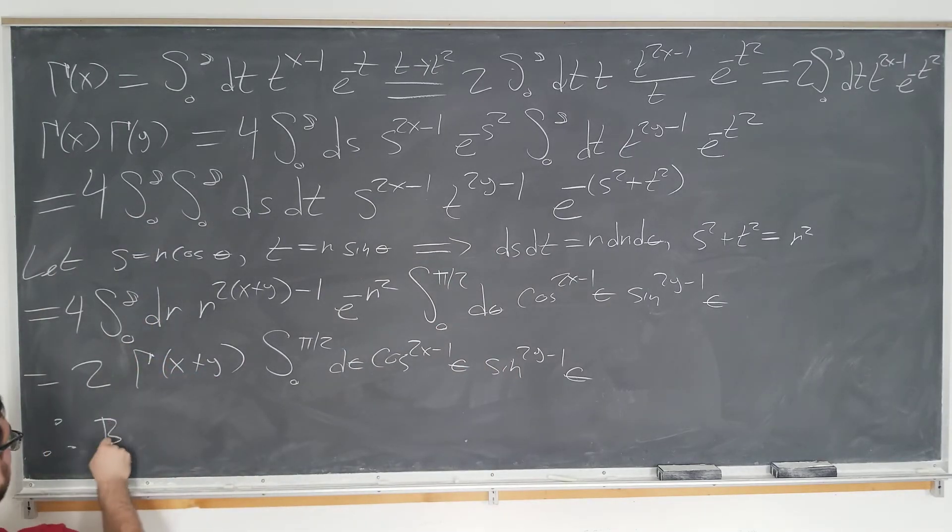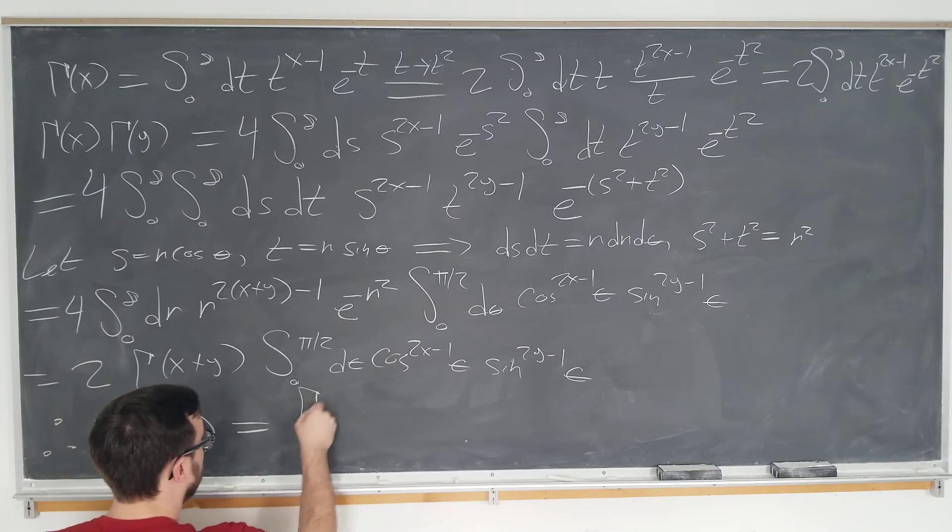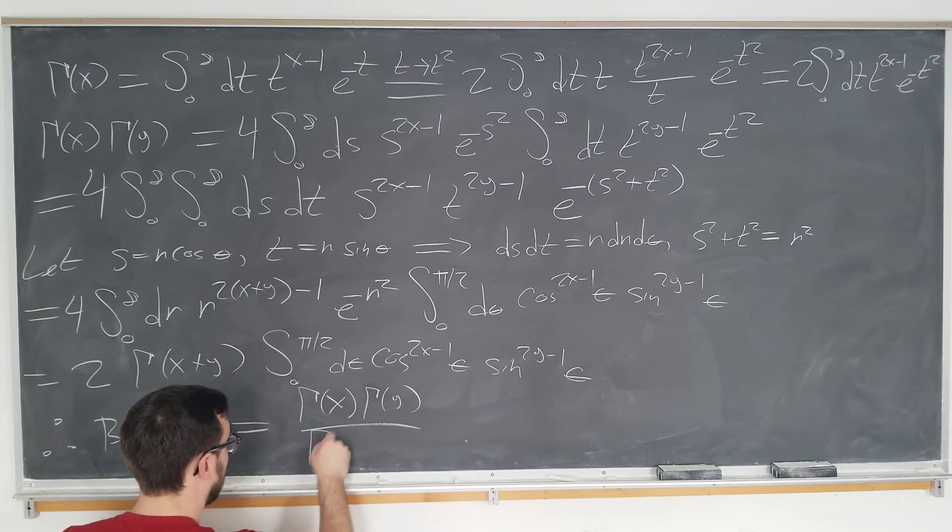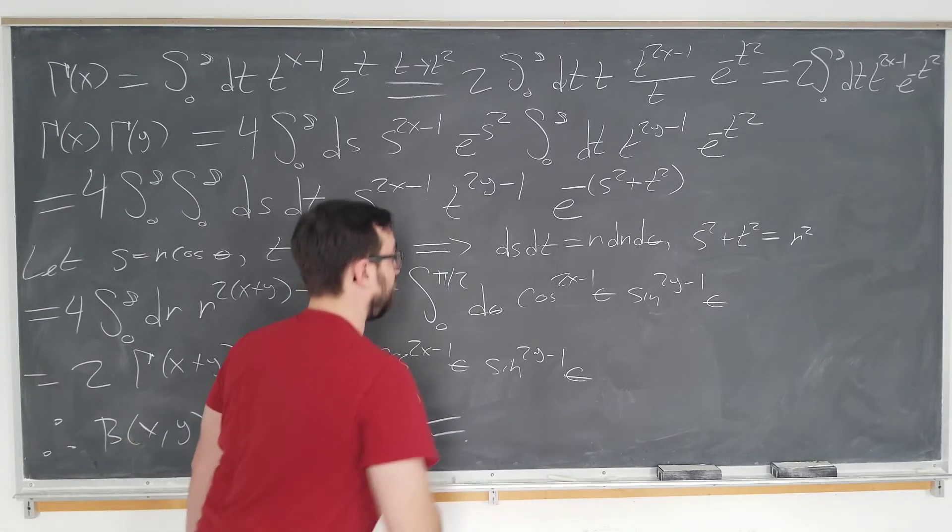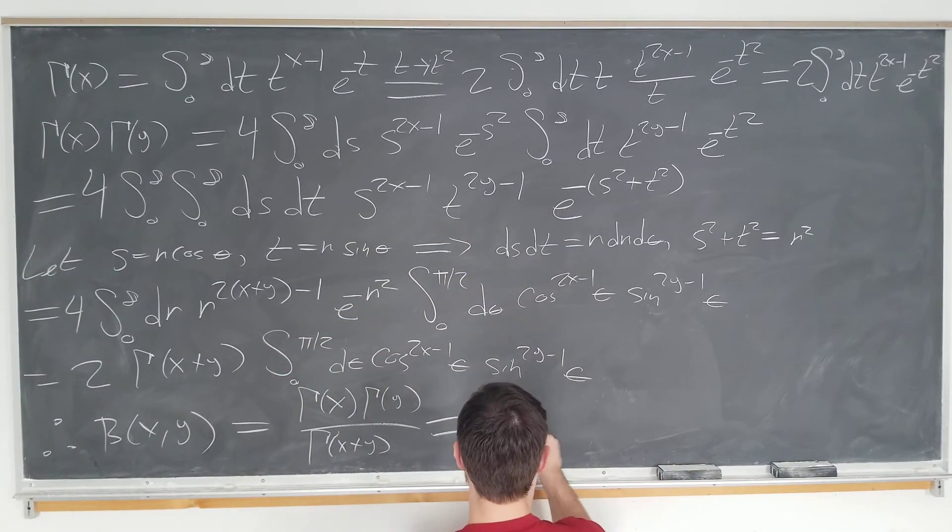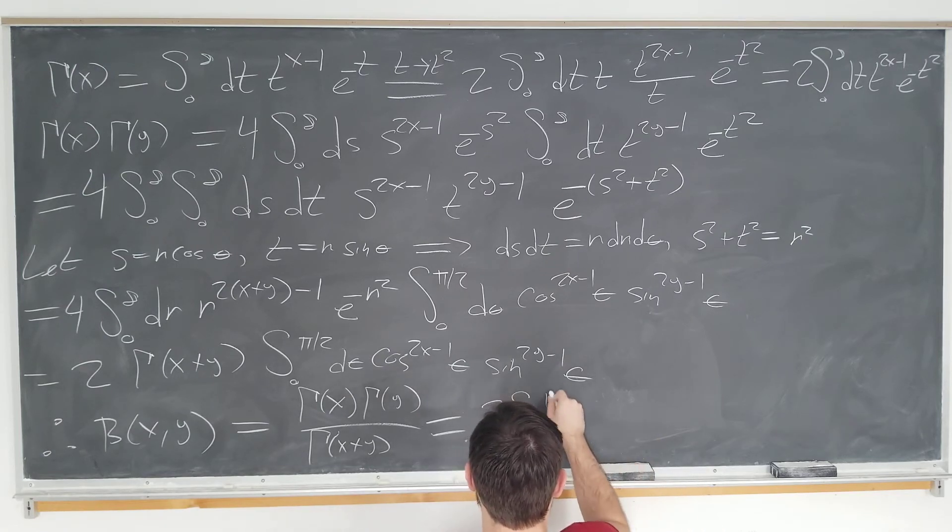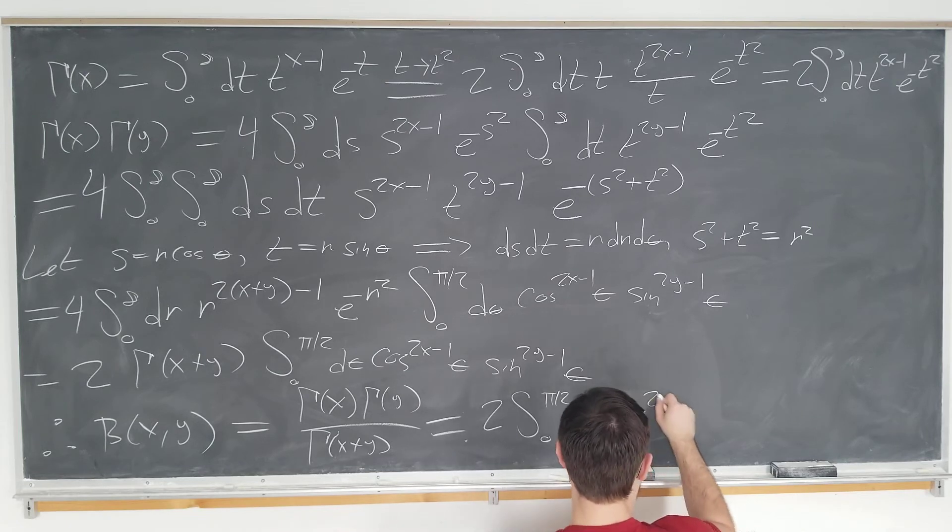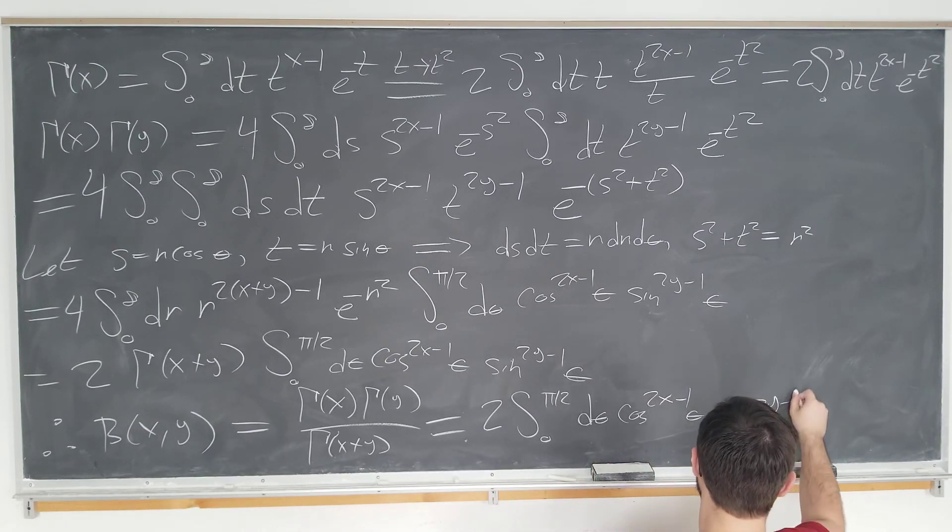So, our beta function of x and y, which we originally defined as gamma of x, gamma of y over gamma of x plus y. We can now write an integral form as two times integral from zero to pi over two d theta cosine 2x minus 1 theta sine 2y minus 1 theta.